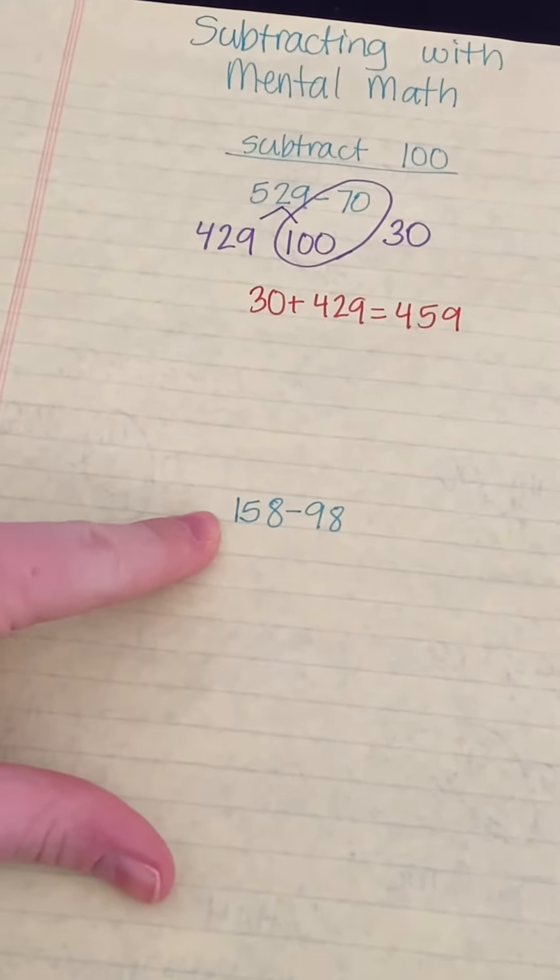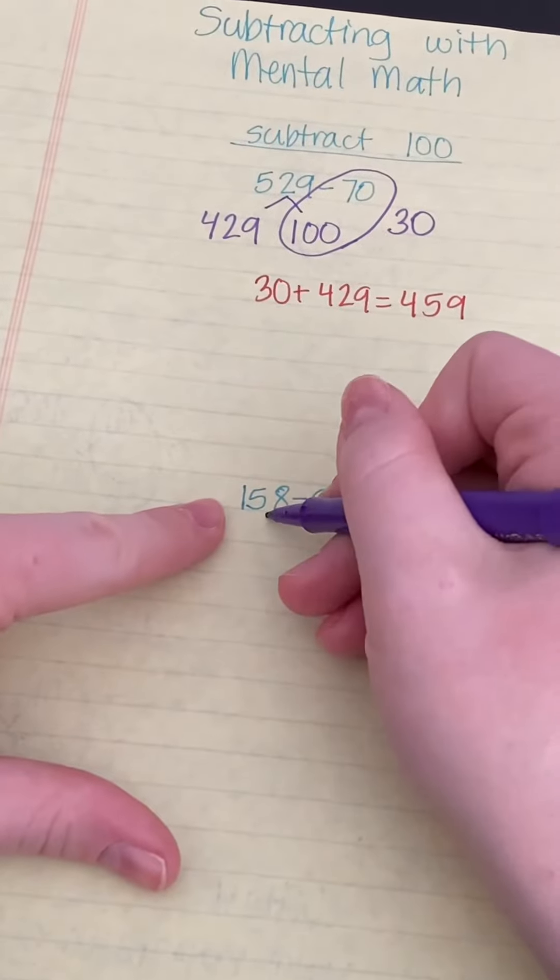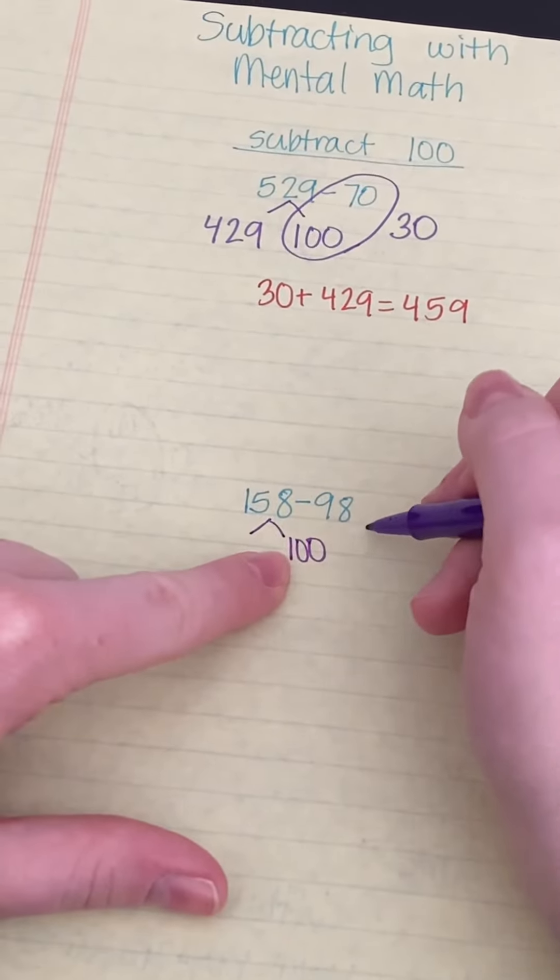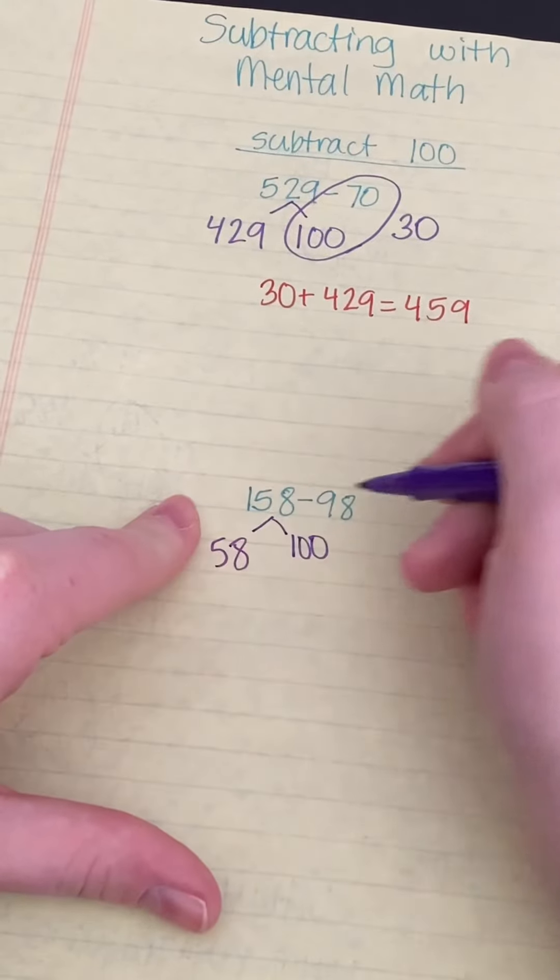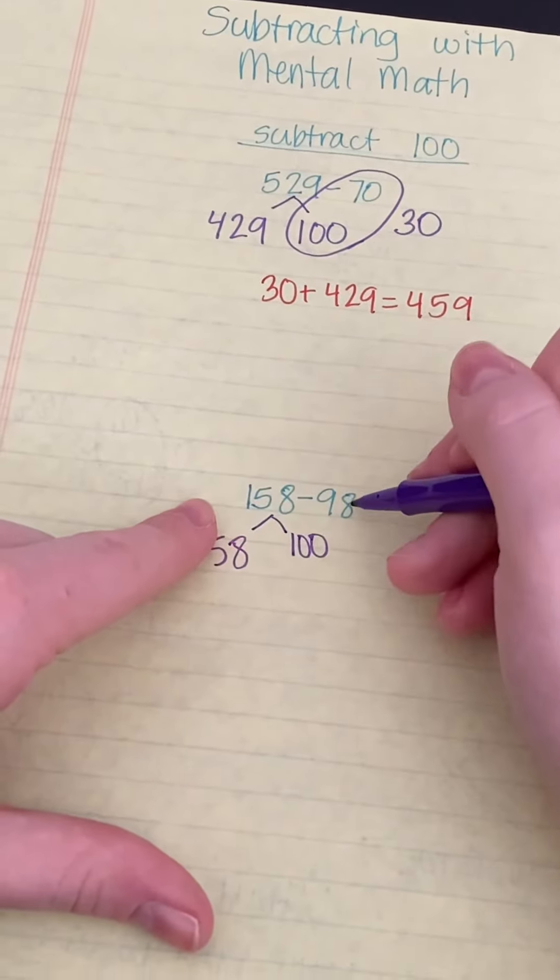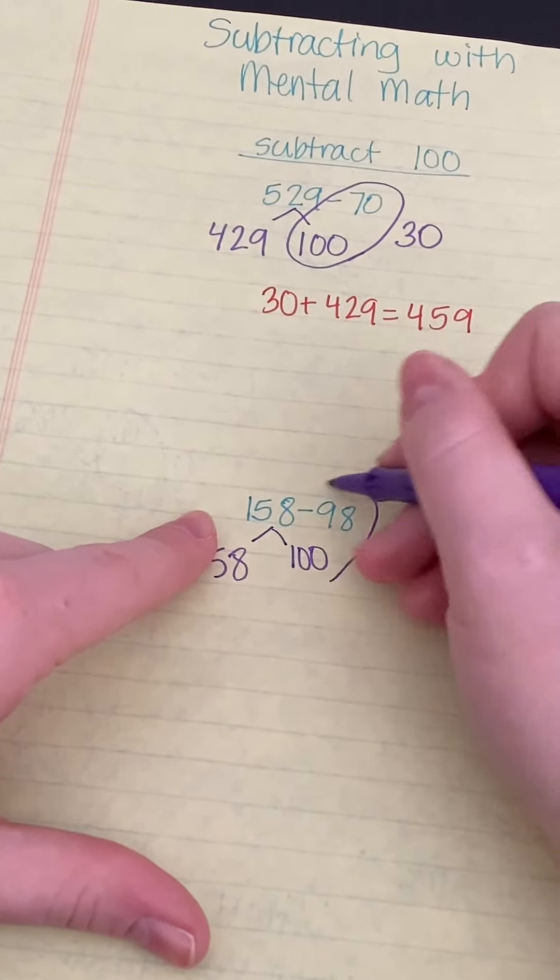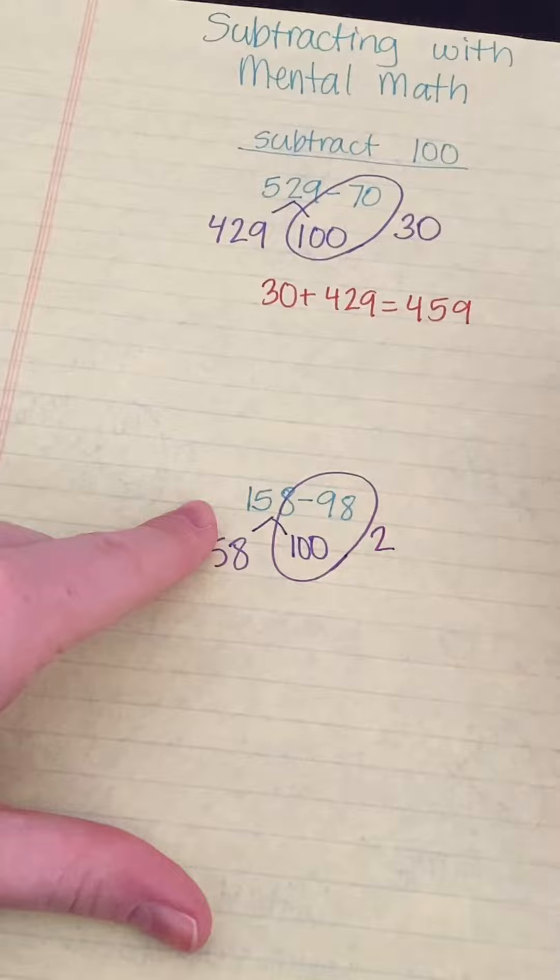I can also use subtract from 100 by decomposing my number into 100 and then 58. That way I can subtract using a number that has multiple tens and ones. So 100 minus 98 is 2.